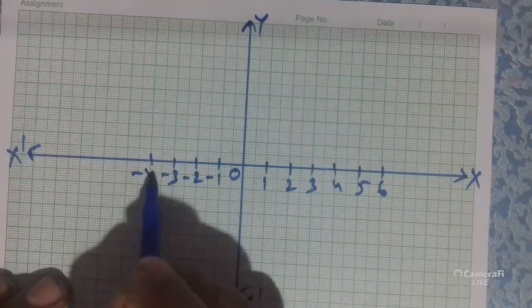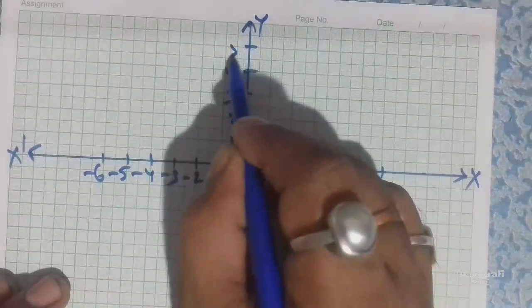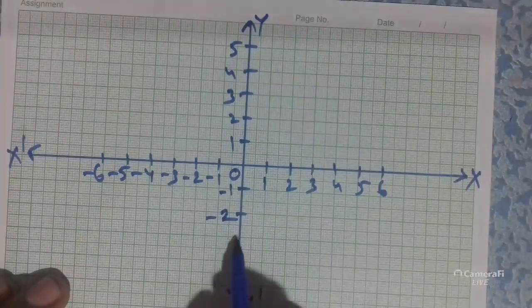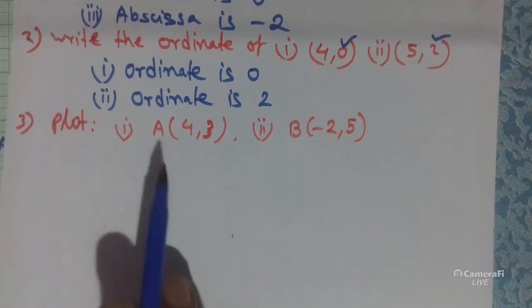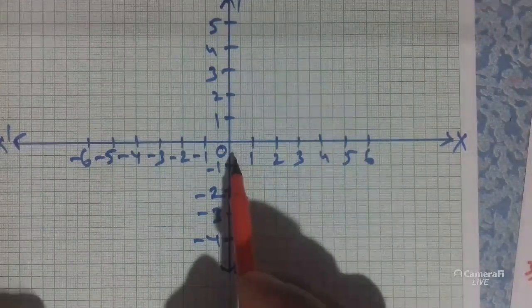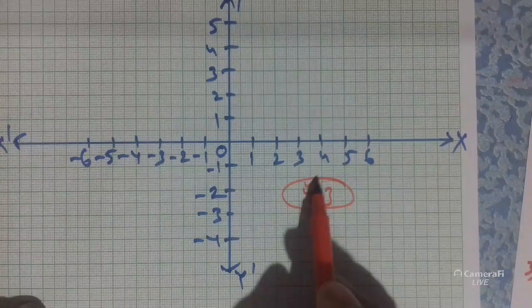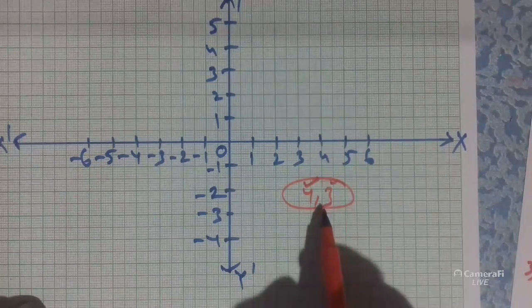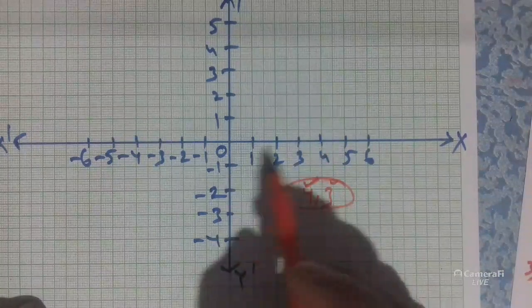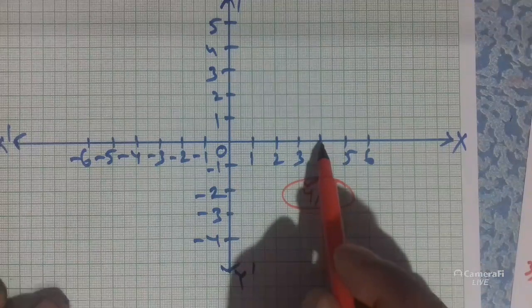The abscissa of the second point is -2. From (0,5) the abscissa is 0, and from (-2,4) the abscissa is -2. The second value is called the ordinate. Problem 2 asks us to write the ordinate of (4,0) and (5,2). Ordinate means we take the second value, so the ordinate of (4,0) is 0 and the ordinate of (5,2) is 2.